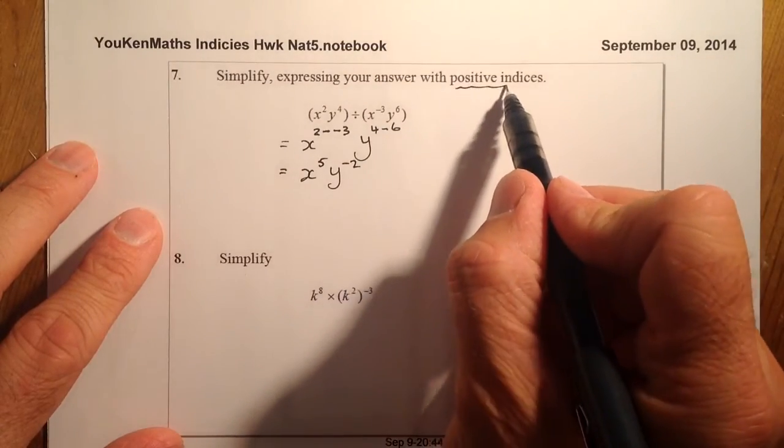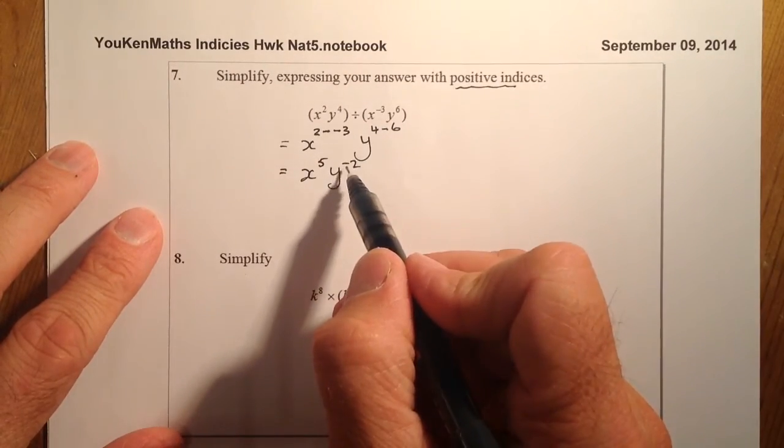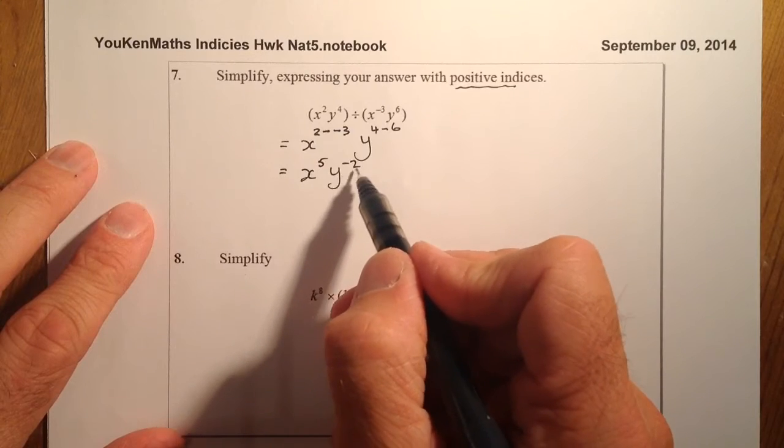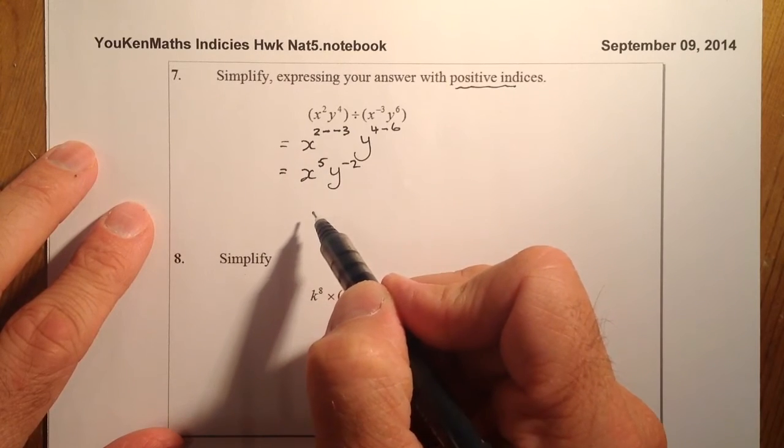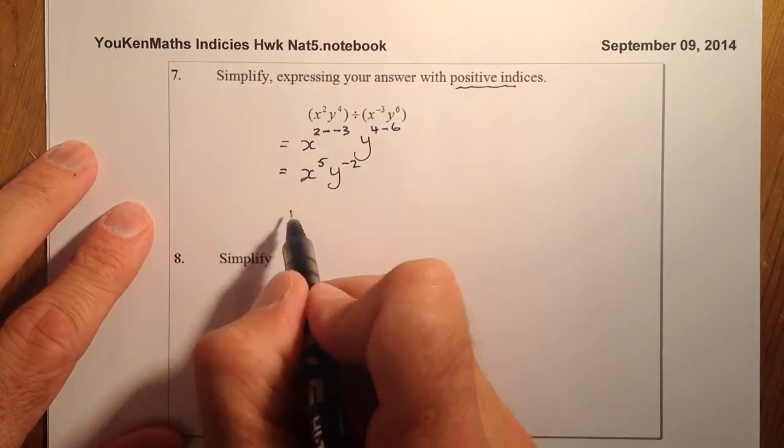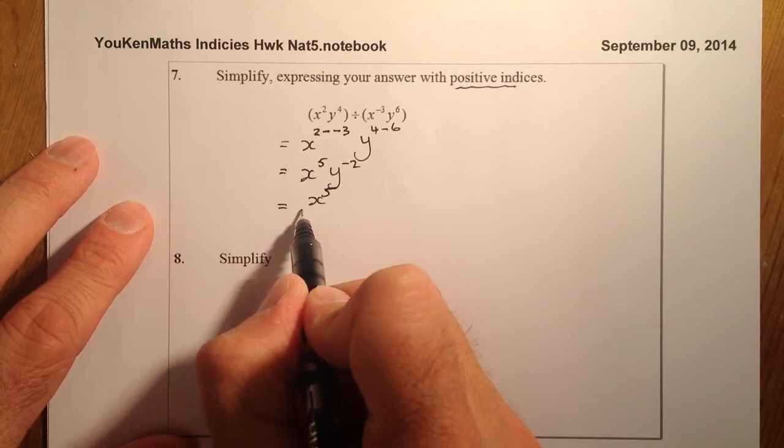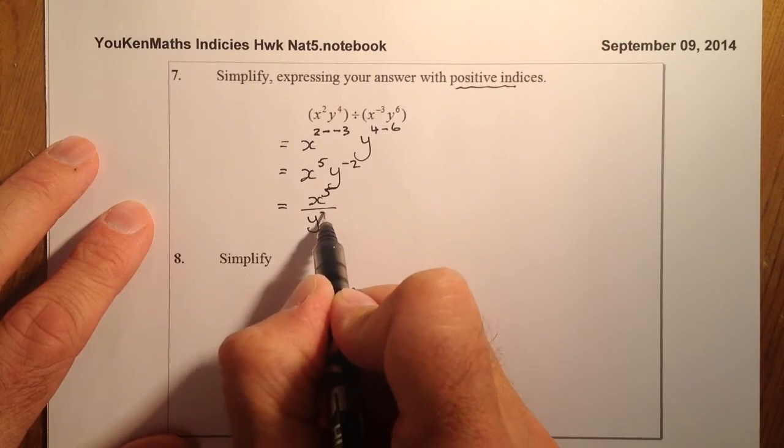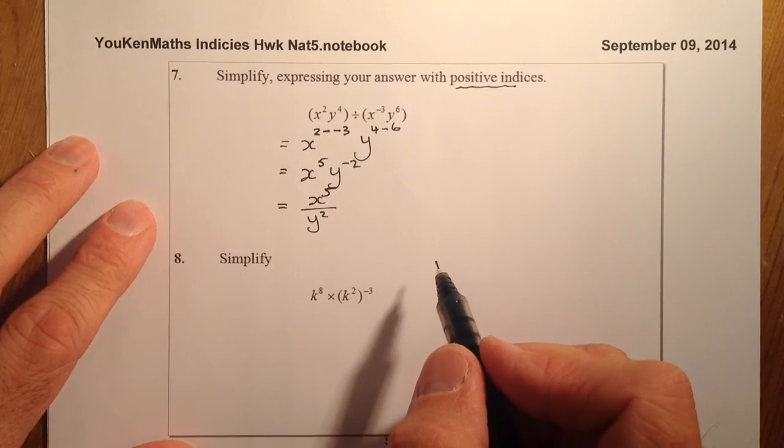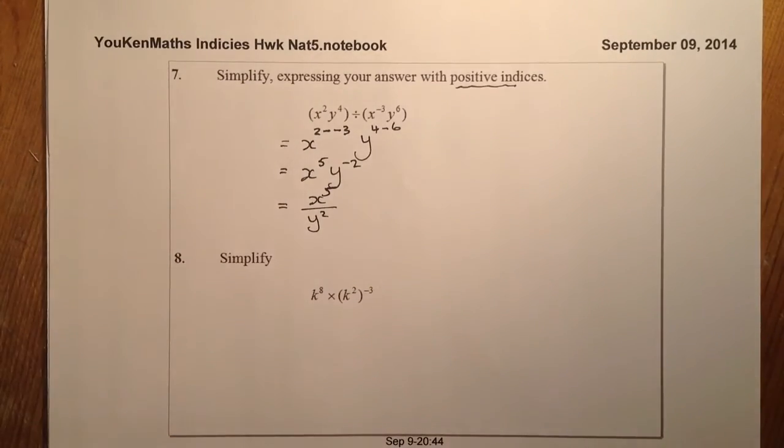Remember, I've got to use positive indices, so there's a negative one. I'm going to take that down to the denominator. That sorts out the final answer: x to the power of 5 on the top and y to the power of 2 on the bottom. That's question 7 complete.